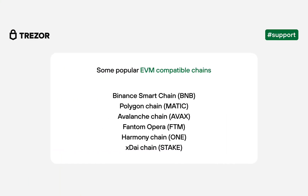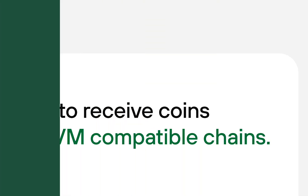Many of the popular coins, such as Polygon or Avalanche, are supported in Trezor. However, you will have to use a third-party wallet such as MetaMask to use these coins since they run on their own chains. These are called EVM-compatible chains, or Ethereum Virtual Machines. EVM is a computation engine that acts like a decentralized computer that has millions of executable projects. It acts as the virtual machine, which is the bedrock of Ethereum's entire operating structure.